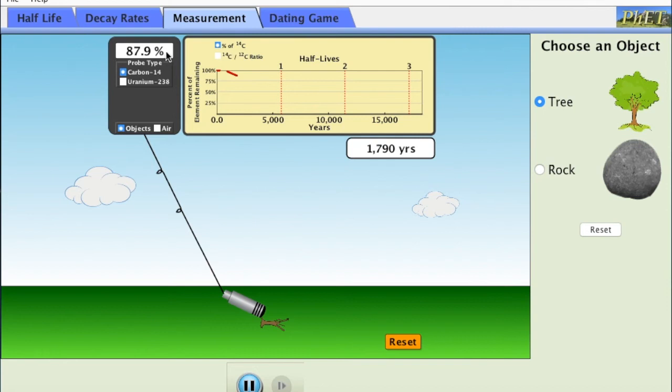We grow the tree, we kill the tree off, we can put our little probe on that tree. It'll show us how many years have passed. As it's passing it's starting to create that graph showing the amount of carbon that's in there. It also shows the percentage.